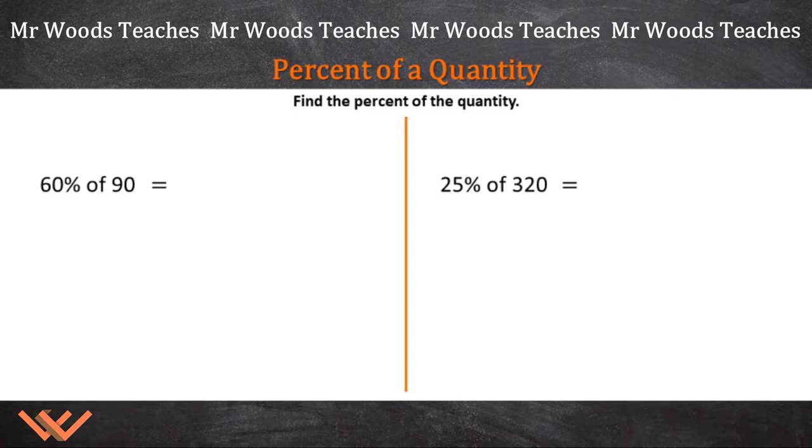Today we're looking at percent of a quantity. Let's read the instructions: find the percent of the quantity. Okay, so we have 60% of 90. One of the things we need to look at is, how do we set up the problem? We look at this as a fraction. That's going to be 60 hundredths, 60 over 100, and we're multiplying that by 90 over 1.